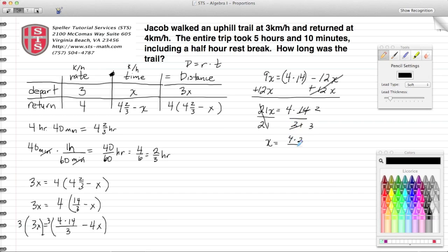I'm not finished with the problem because I just found what X is, and they want to know how long was the trail - they want to know the distance. I see that the distance is 3X, so all I'm going to do is substitute in the 8/3 for the X. I'm going to multiply 3 times 8/3. I see these threes cancel and I'm left with just a distance of 8. So I believe the distance to be 8 kilometers as my answer, but I need to be sure.